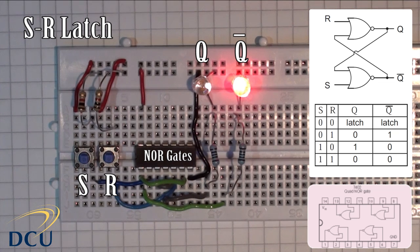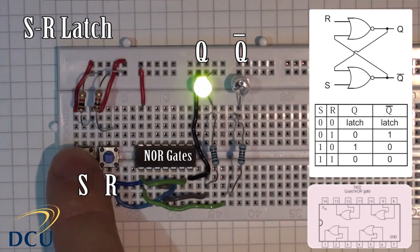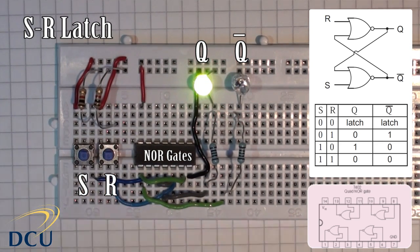So what we have here is a very basic memory unit, where when the inputs are 0, 0, we remember the last state that we currently had selected. Whether that's 0, 1 or 1, 0, it remembers the state. So we can set the memory over time now to remember our value that we set into the flip-flop.